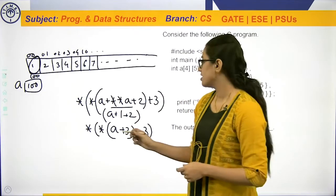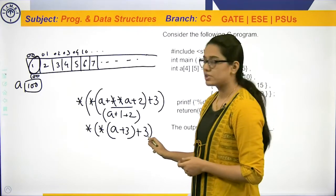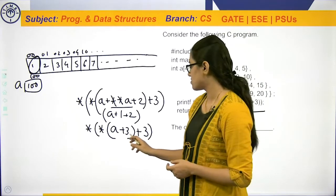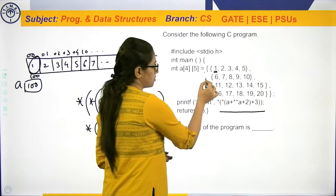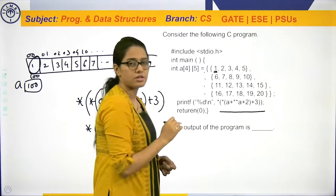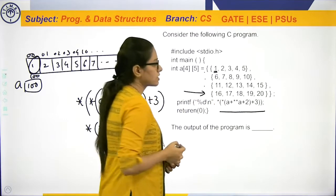So, indirectly what we need is 3rd row, 3rd column. The element present in the 3rd row, 3rd column. Now, let us see what is the element present in 3rd row. This is 0th row, 1st, 2nd and 3rd row. So, 3rd row, 3rd column.